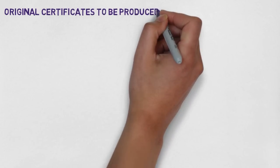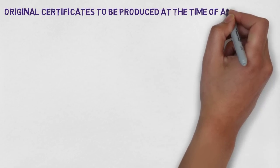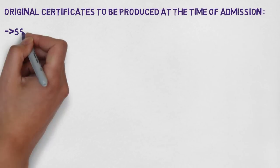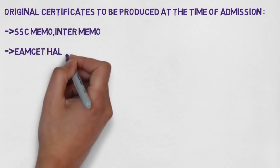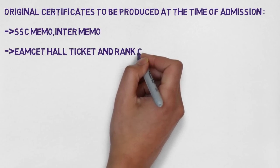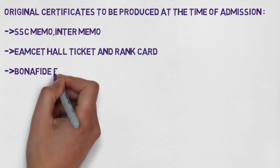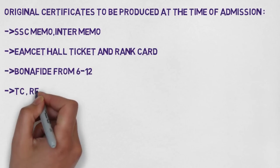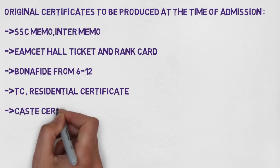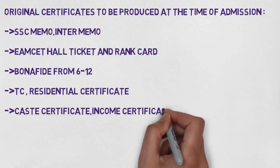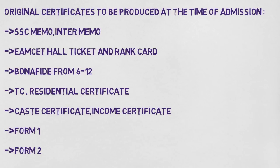Original certificates to be produced at the time of admission: SSC memo, inter memo, MSET hall ticket and rank card, bona fide certificate from 6th to 12th, residential certificate and TC certificate, cash certificate and income certificate, Form 1 and Form 2.